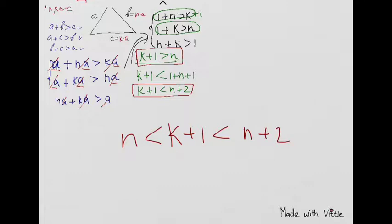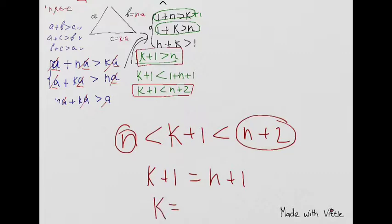As I told before, K and N are whole numbers. In this case, we have only one option. K plus 1 has to be between N and N plus 2. It is only one whole number, N plus 1. And as you see from this, it is clear that K equals N.